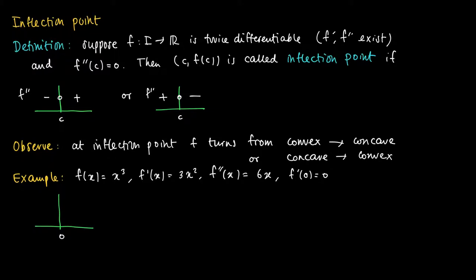The sign scheme of the second order derivative is found by studying 6x. We have a negative second order derivative on the left hand side and a positive sign for all x larger than 0. So indeed we find that (0, f(0)), which is just the origin, is an inflection point for this function.